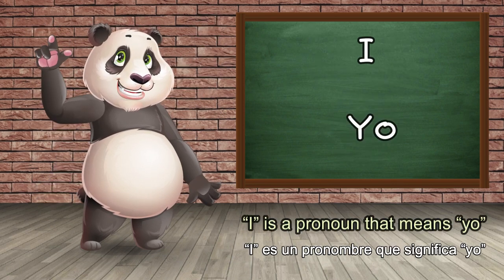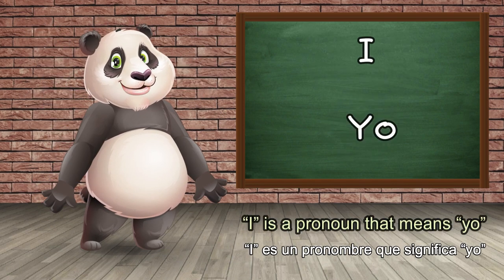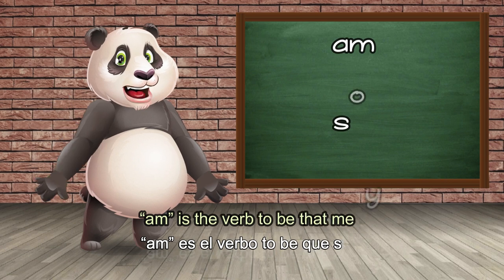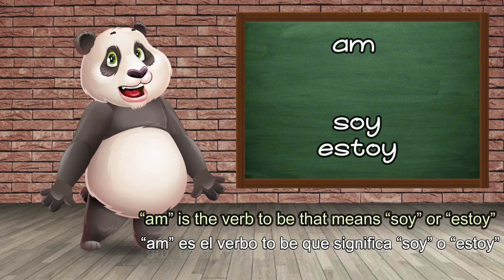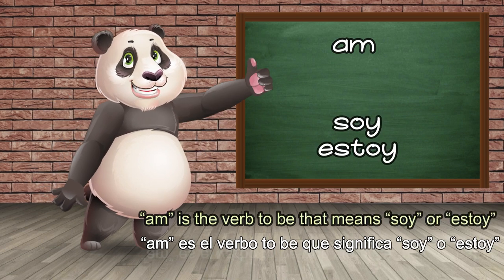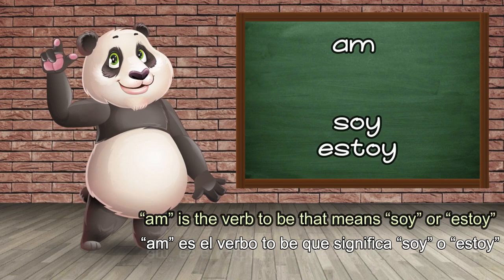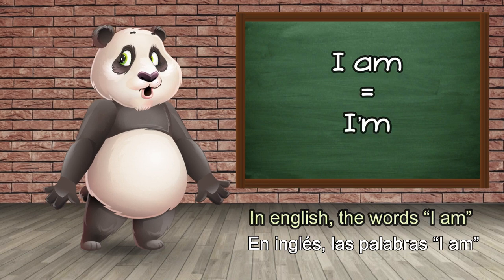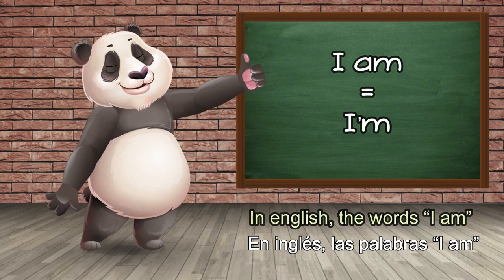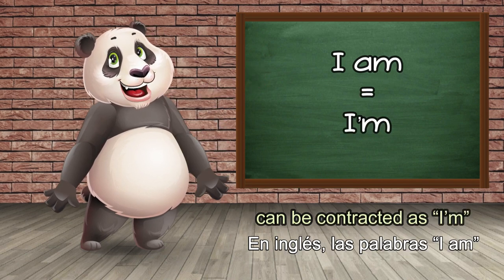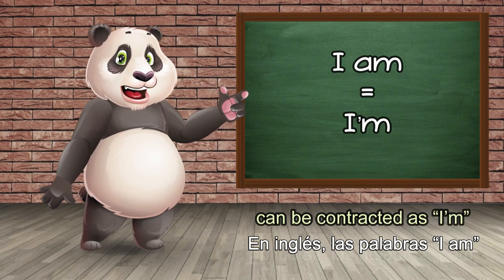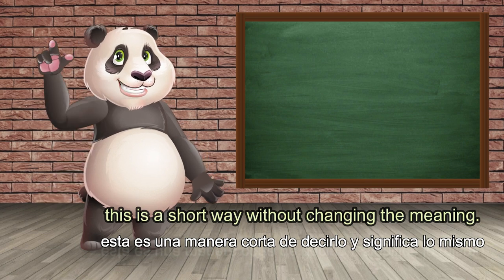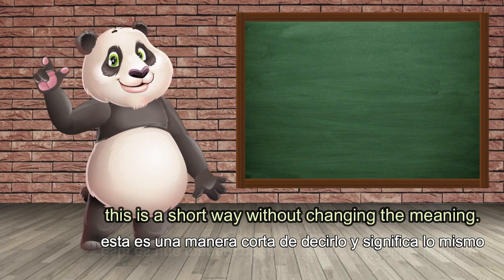I is a pronoun that means yo. Am is the verb to be that means soy or estoy. In English, the words I am can be contracted as I'm. This is a short way without changing the meaning.